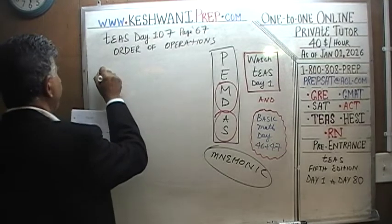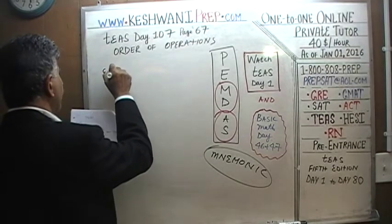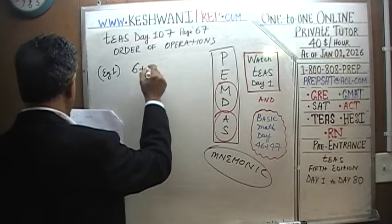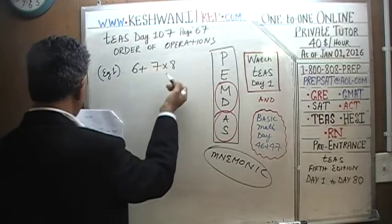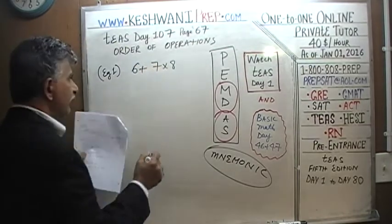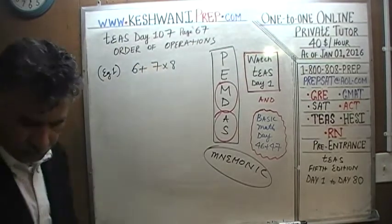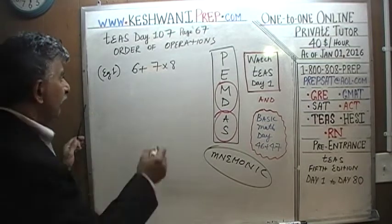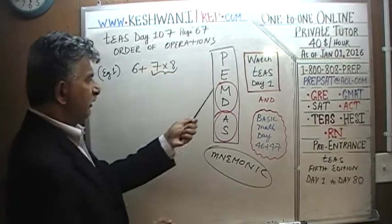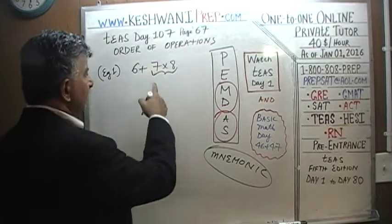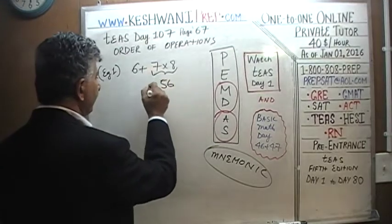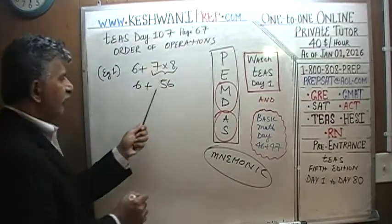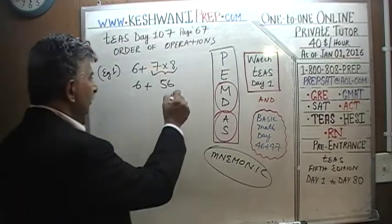Example one: six plus seven times eight. This is the same situation we just dealt with. We should do the multiplication first — seven times eight is 56. Then 56 plus six: 56 plus four would be 60, so it is 62.